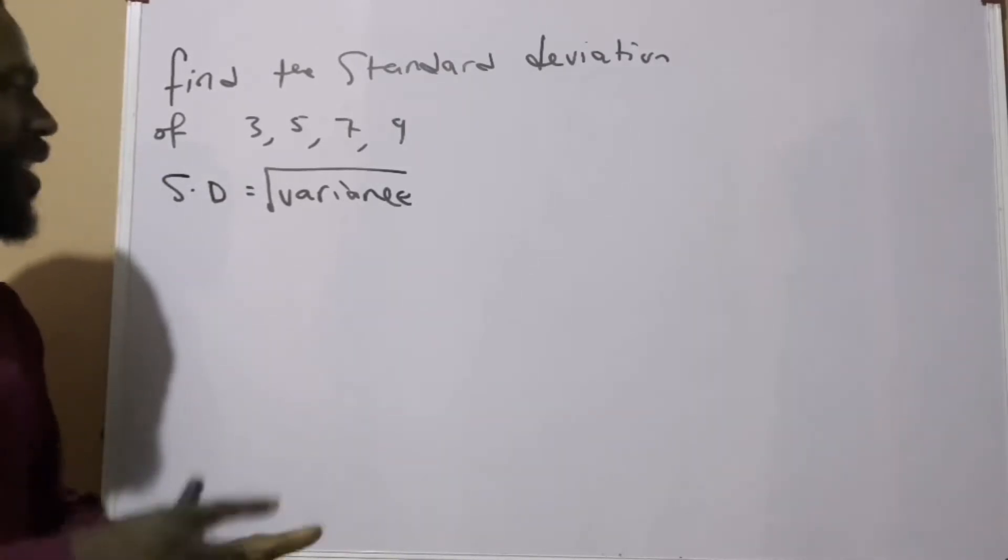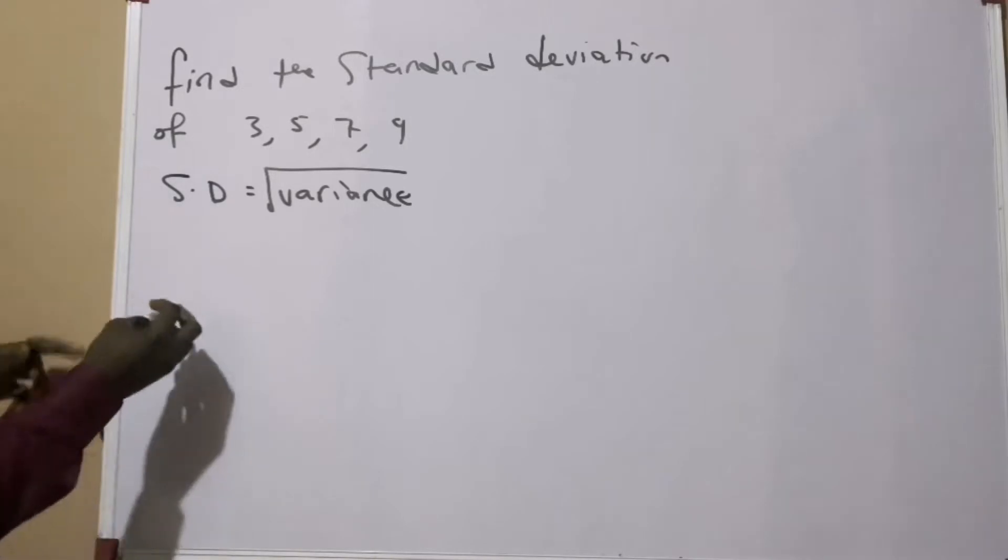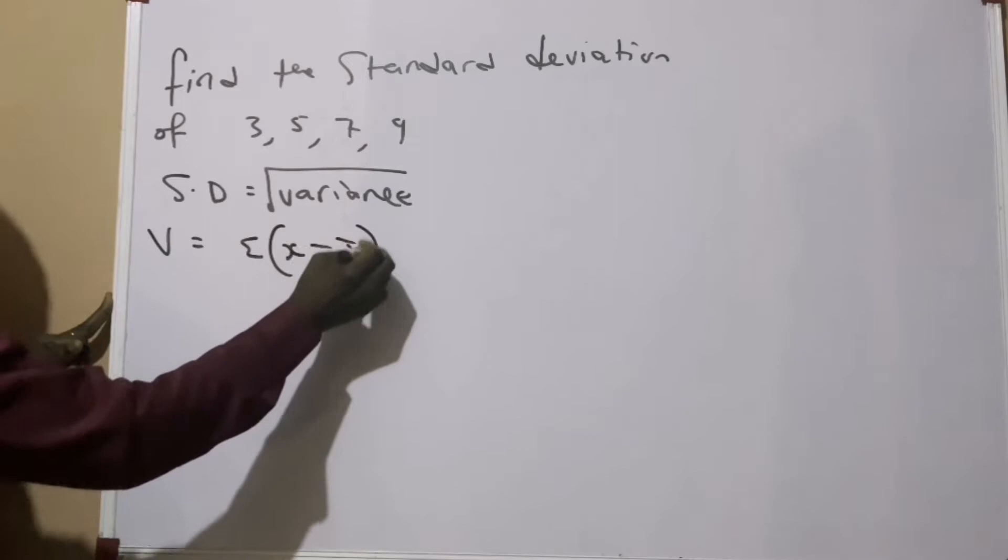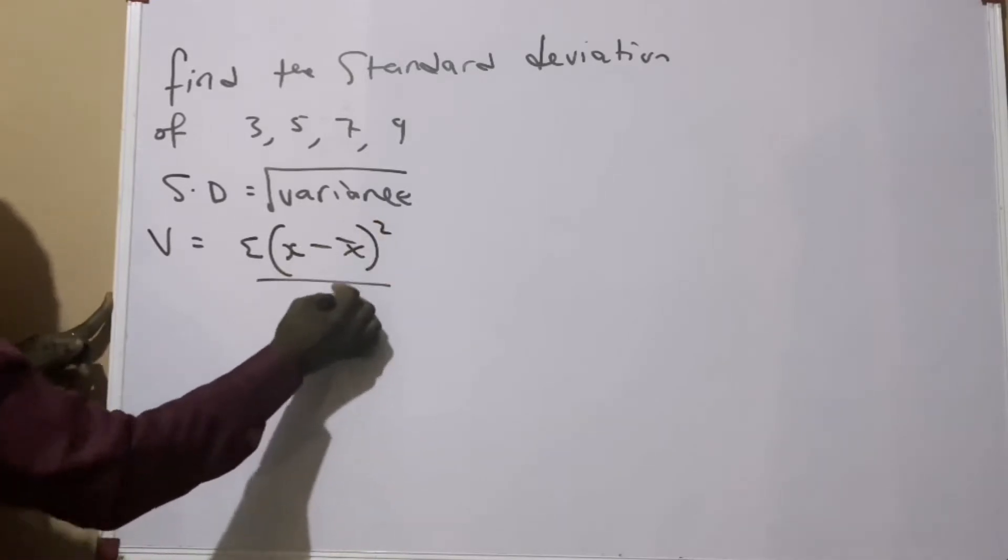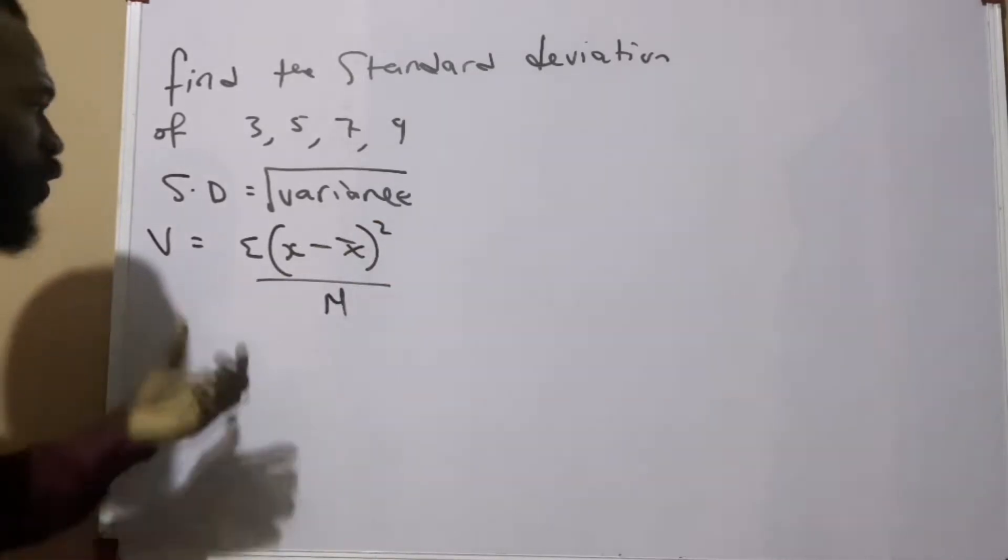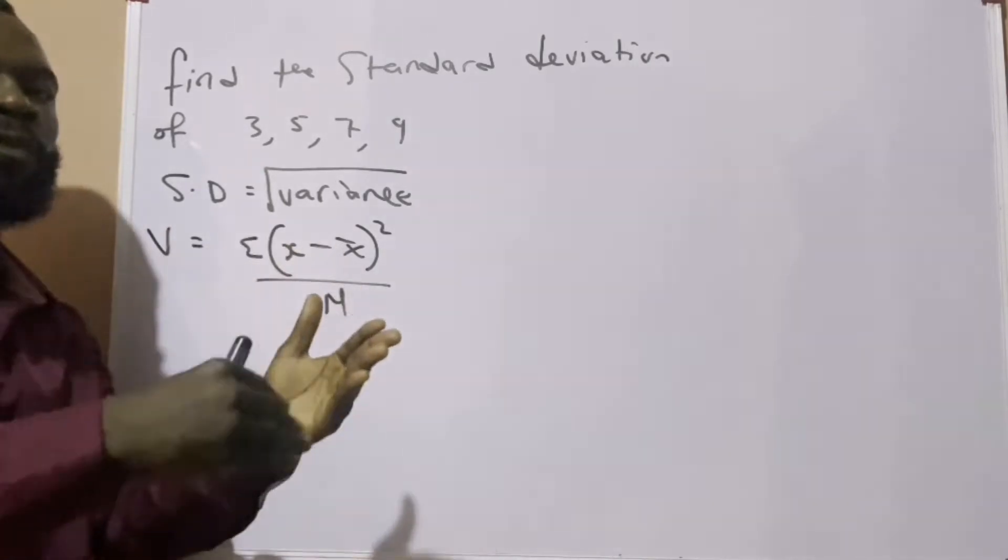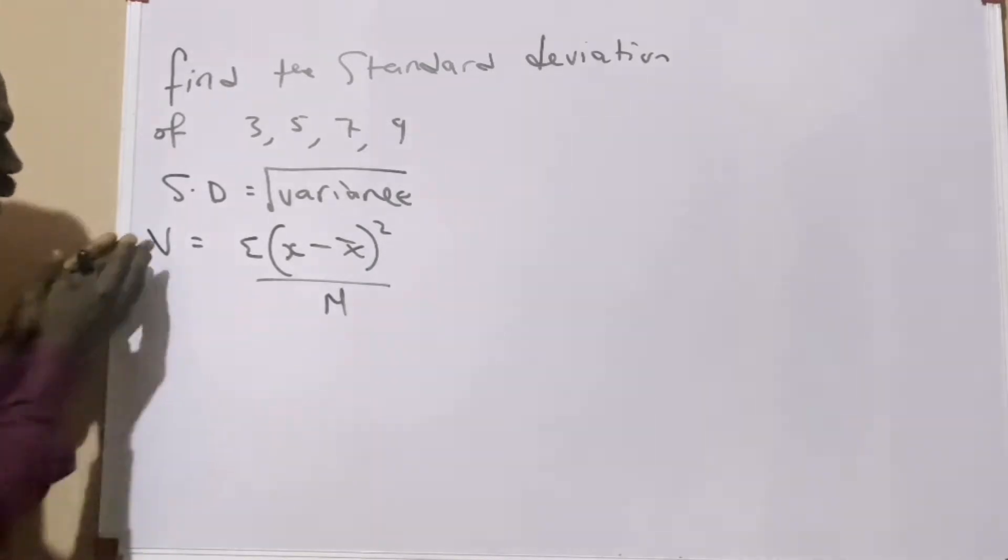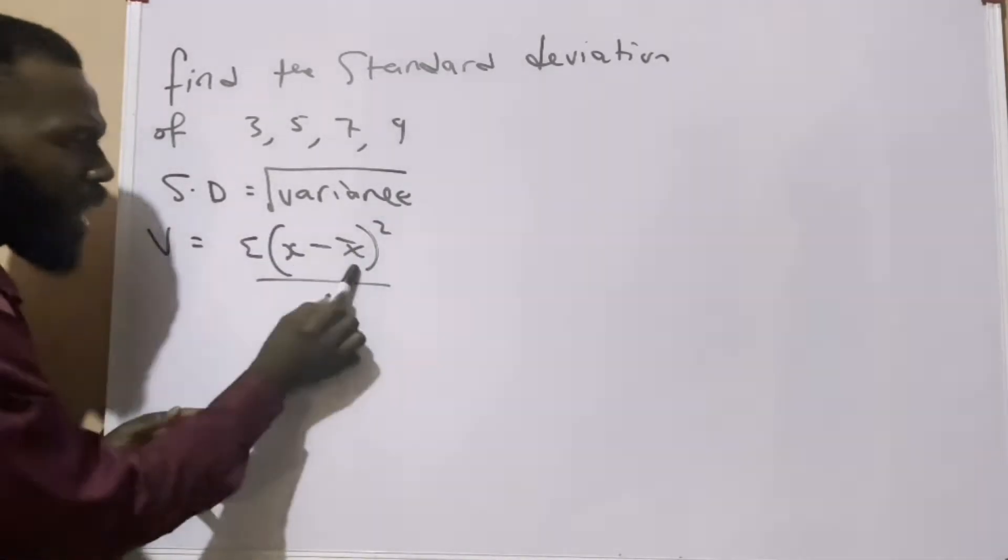Now variance on its own has its own formula. Variance is sigma into the bracket of (x minus mean) raised to the power of 2 over n. Now this formula is used for variance when the question does not involve frequency.